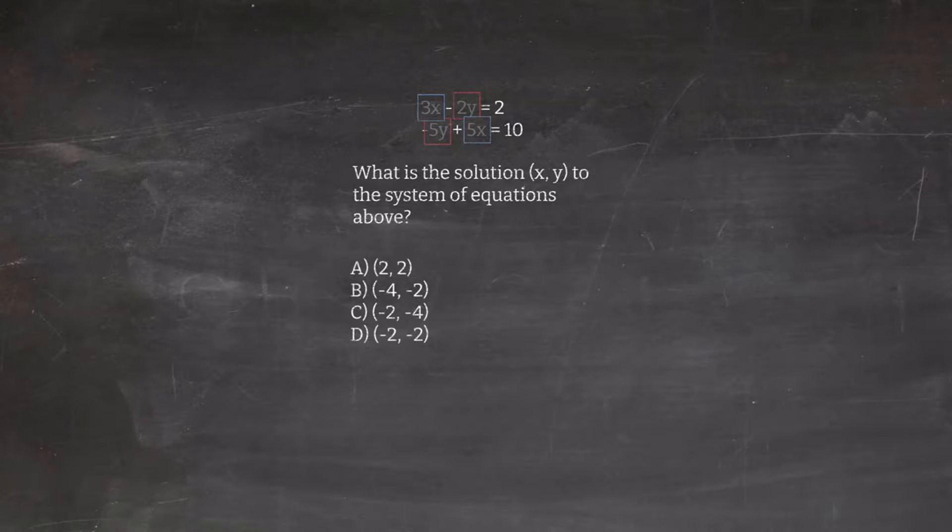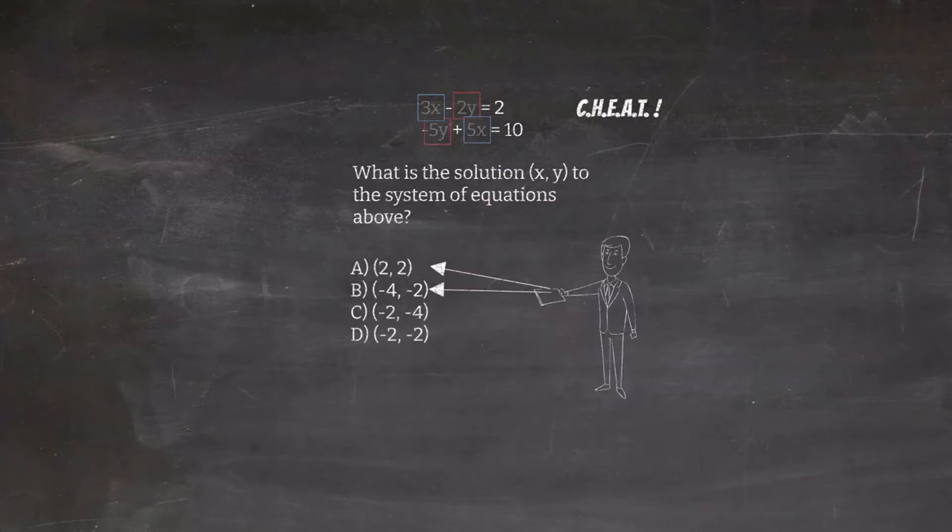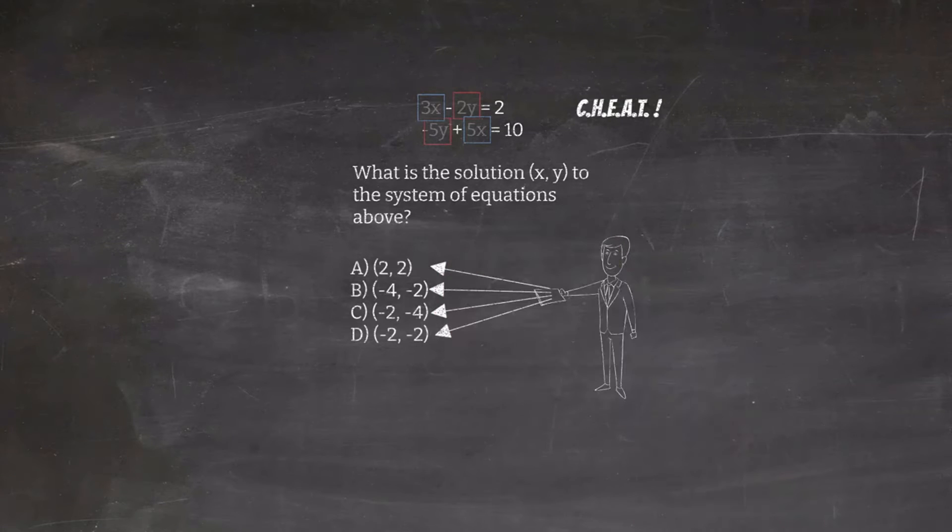If I want to use a linear combination or elimination, I can do it but I still have to be careful to make sure I line up my X's and my Y's. Or we could just cheat and think to ourselves, wait a minute, they asked me what's the solution and then gave me the answer. I'm going to test the values they gave me.